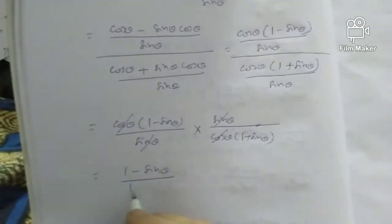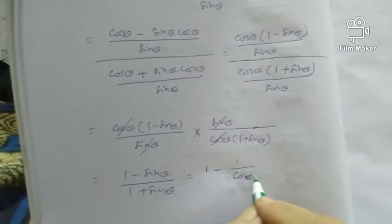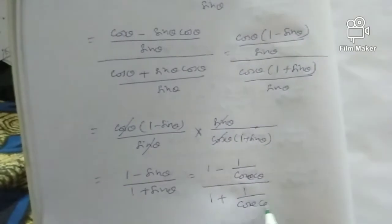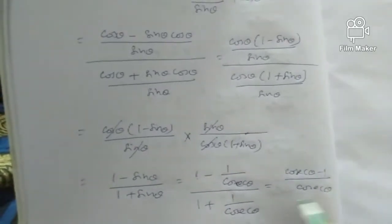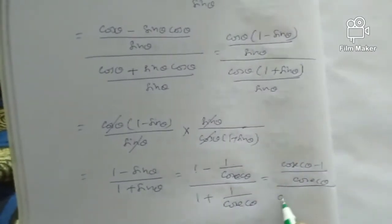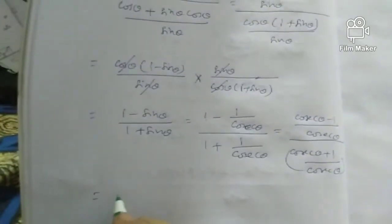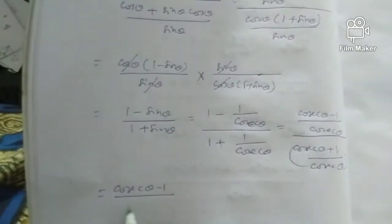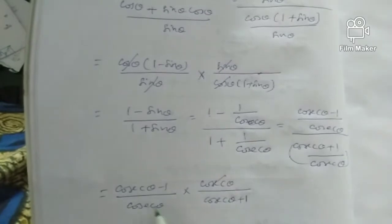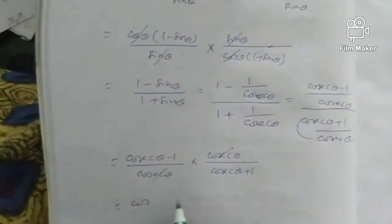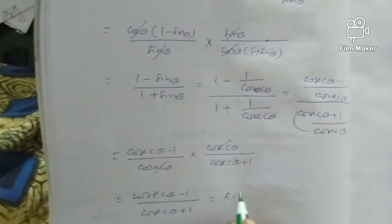Now we have 1 minus sin theta by 1 plus sin theta. Since sin theta is 1 by cosecant theta, we substitute: 1 minus 1 by cosec theta over 1 plus 1 by cosec theta. Taking LCM gives cosec theta minus 1 by cosec theta over cosec theta plus 1 by cosec theta. Cancelling cos theta, we get cosec theta minus 1 by cosec theta plus 1, which equals RHS. Proved.